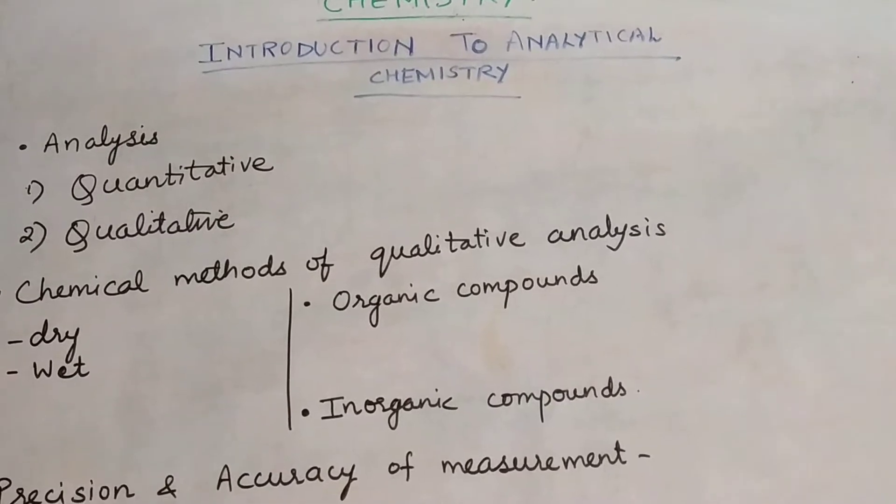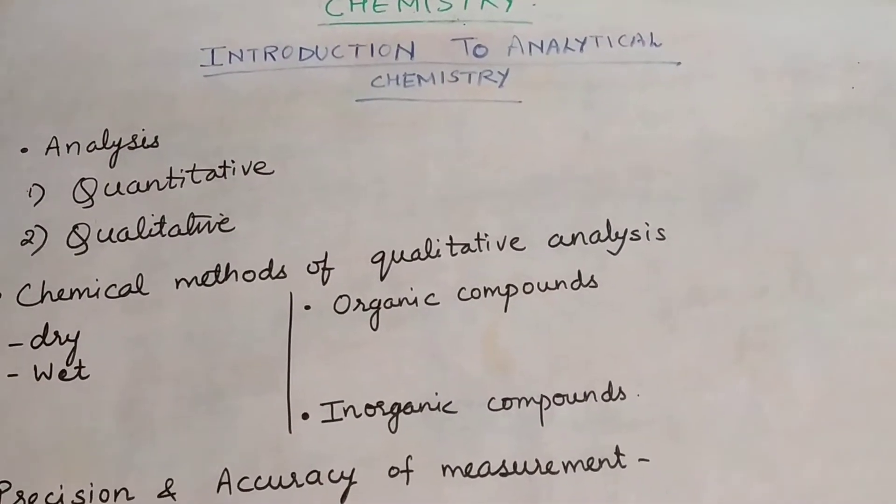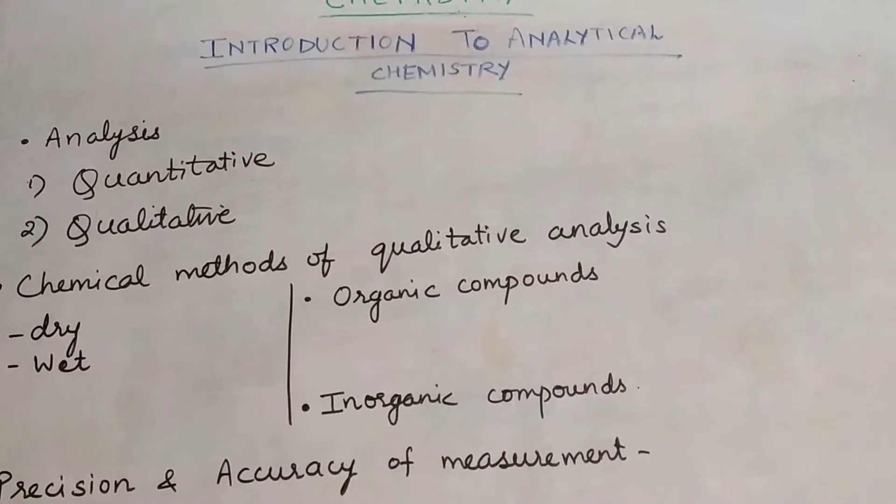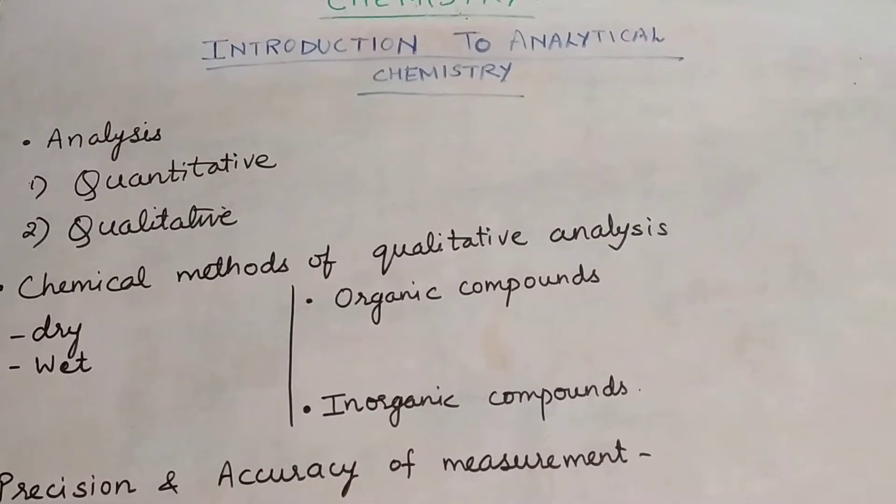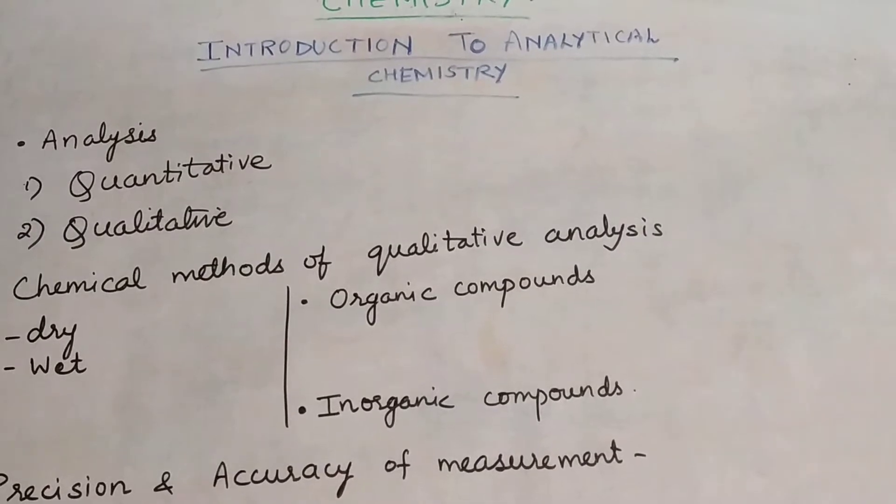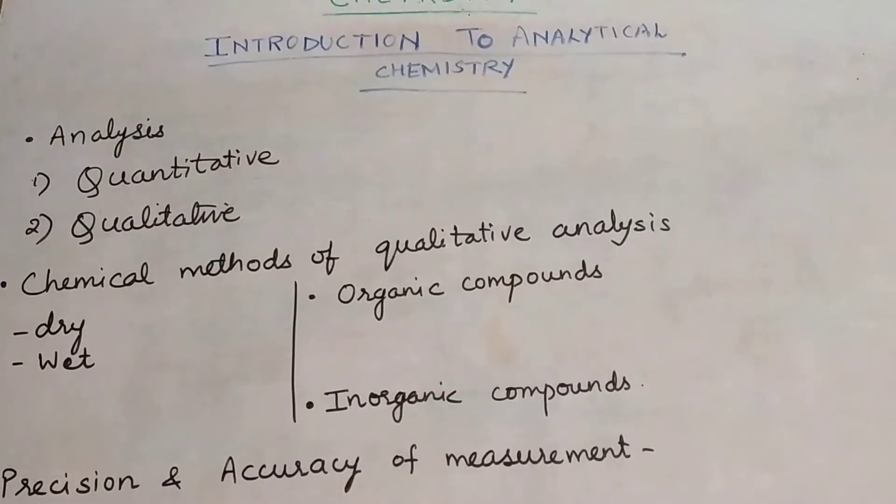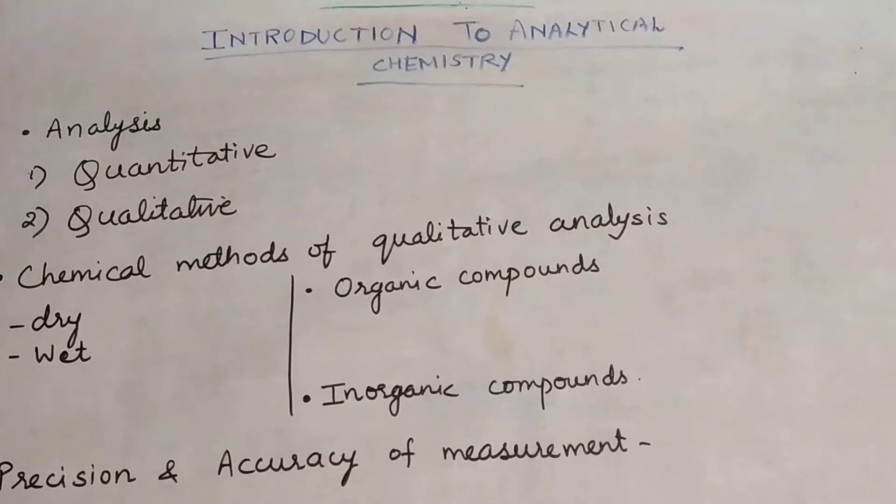One is quantitative analysis and the other is qualitative analysis. Quantitative comes from the word quantity, in which we are finding out the amount of elements present in a compound or molecule. Quantitative is about amount.